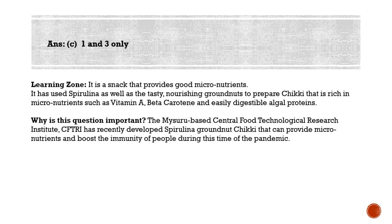Other nutritious products of CFTRI include Nutri Mango Fruit Bar and cardamom-flavored water, also supplied to migrant laborers. The mango bar is rich in carbohydrates, carotene, Vitamin C, and zinc to improve immunity. The cardamom-flavored water with traditional herbs has immune-boosting qualities. Spirulina is an organism that grows in both fresh and salt water. It is a type of cyanobacteria — a family of single-celled microbes often referred to as blue-green algae.